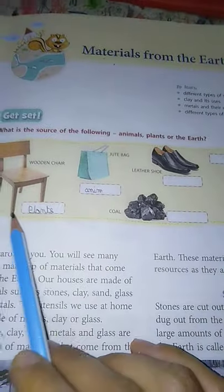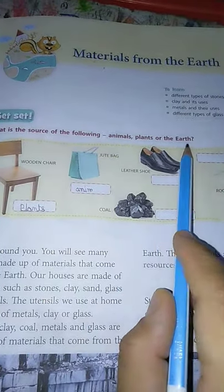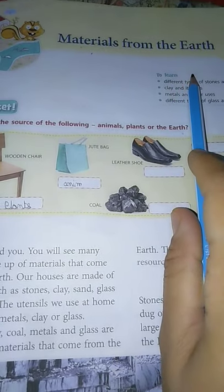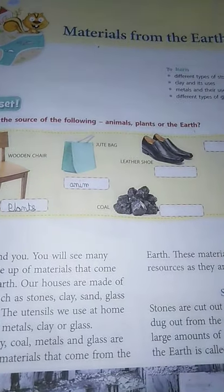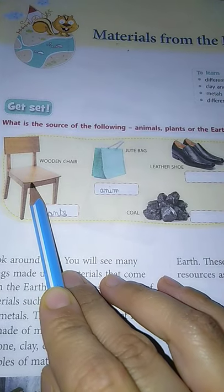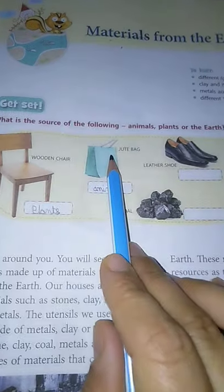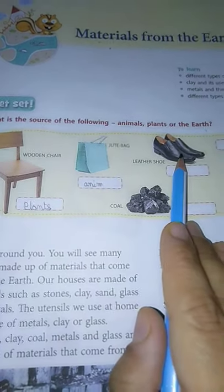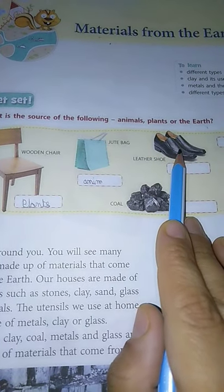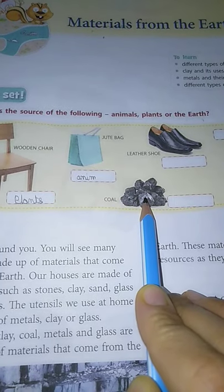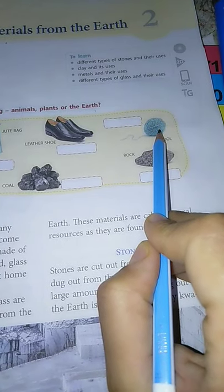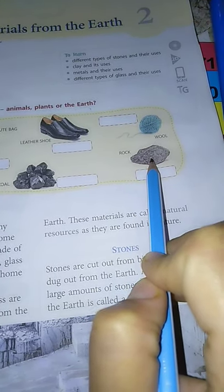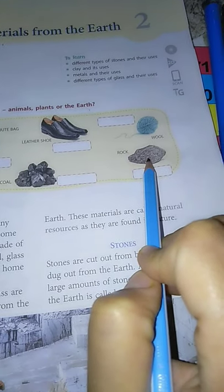Now there is a get-set activity: what is the source of the following — plants or the earth? From the earth means from the ground — things which come by digging the earth. For example, a wooden chair comes from plants; a jute bag is a plant product; a leather shoe is an animal product; coal we get from inside the earth — it is a product from the earth; wool we get from sheep — it's an animal product; and rock is found on the earth, so it is a material from the earth.